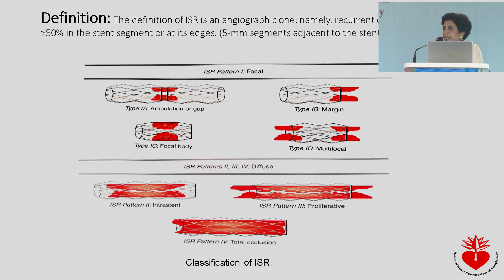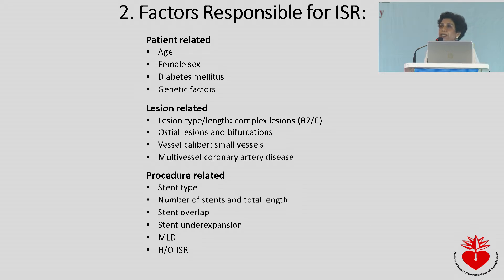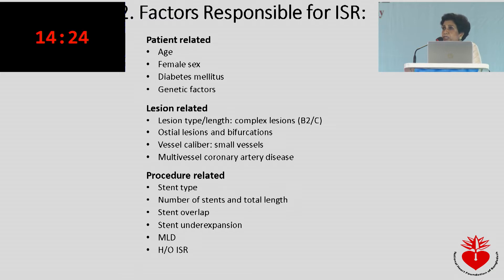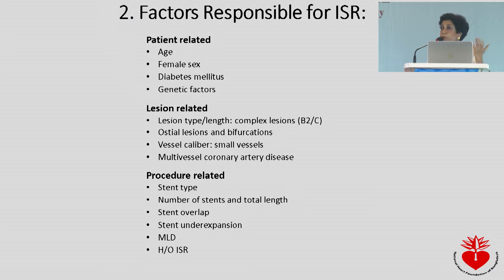We are all familiar with the Mahran classification of in-stent restenosis, which is basically anatomically driven. Why does a person have in-stent restenosis? There are certain responsible factors. Number one, it could be patient-related — diabetic patients are notorious for suffering from in-stent restenosis. It could also be lesion-related; certain lesions are more prone to in-stent restenosis, such as complex bifurcation lesions and long lesions.